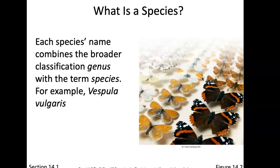We define a species as a group of living organisms consisting of similar individuals, capable of exchanging genes or interbreeding. We have to add that piece to the story — they're capable of mating and leaving a viable offspring.